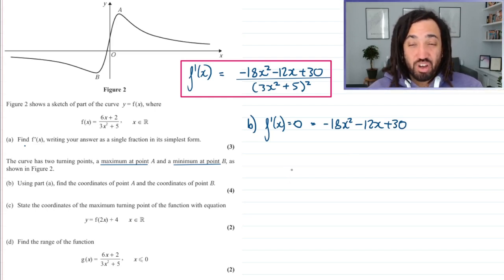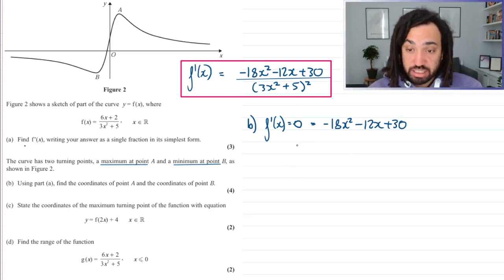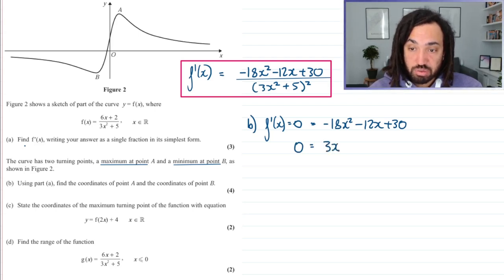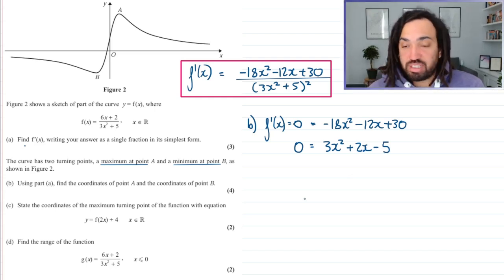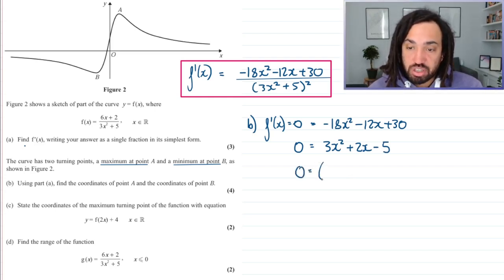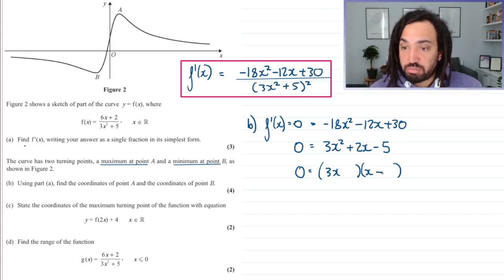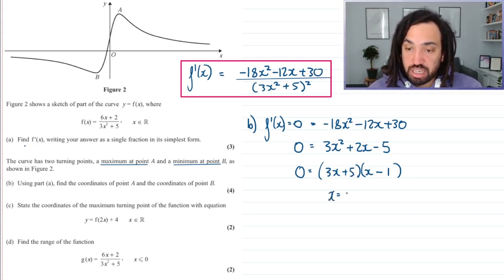I'm going to divide through by minus six, which gives us three x squared positive, plus two x and minus five, because I just like to have my x squared terms positive. So this I'm hoping is going to factorise. I think this should be minus one here and then plus five there. I think that works. So this tells us that x is equal to minus five over three and x is equal to one.